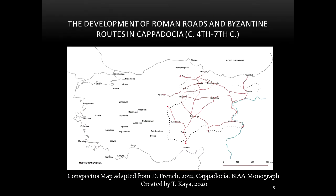The development of the Roman roads in the region dates back to the 1st century AD. Byzantine roads in Cappadocia were in fact Roman roads. Roads were established by Roman emperors including Vespasian and Domitian. In the eastern frontier area of Asia Minor, the main road between Satala and Melitene in the north-south direction was used to provide the security of the empire.